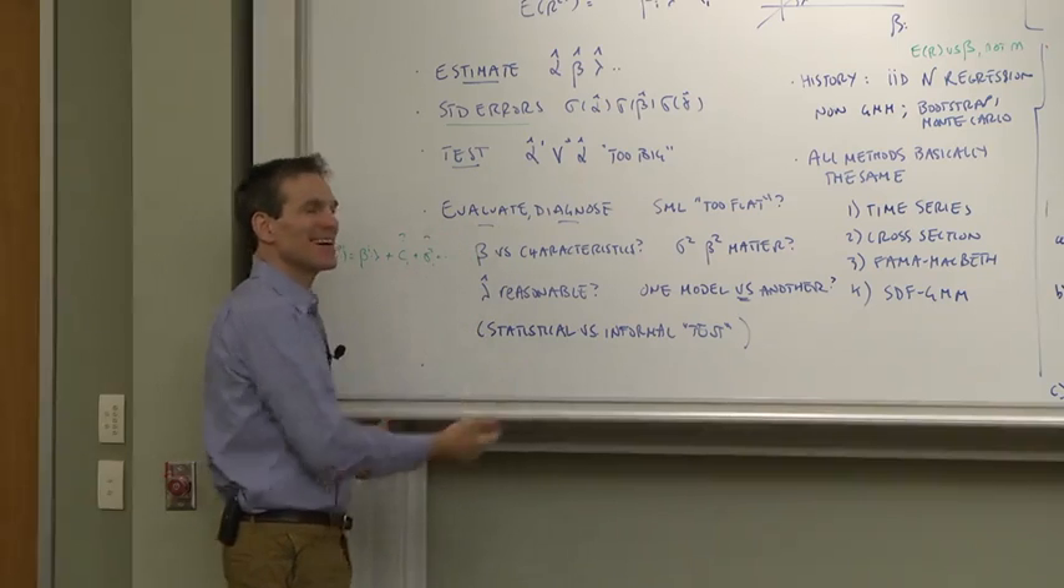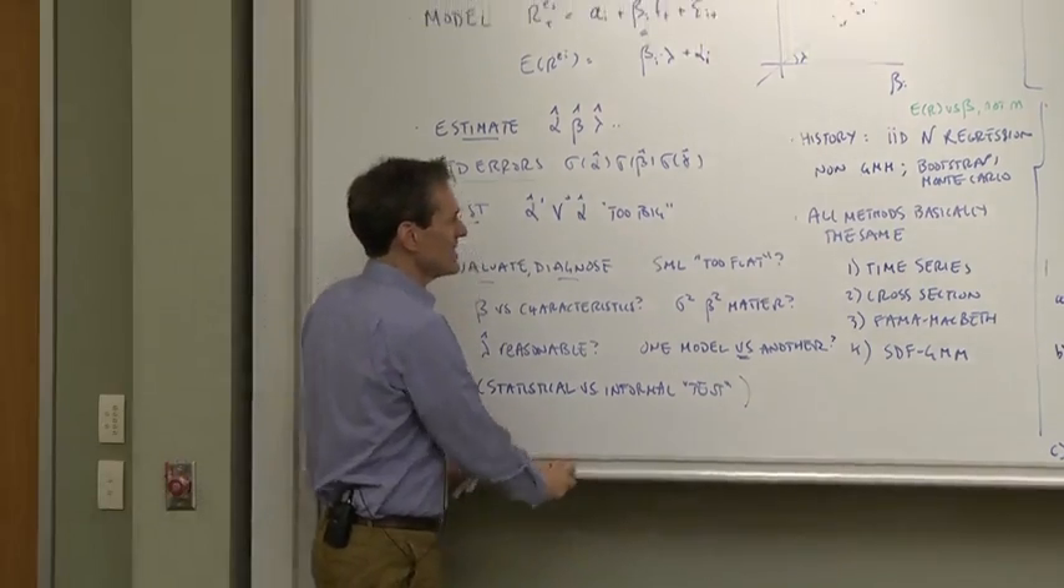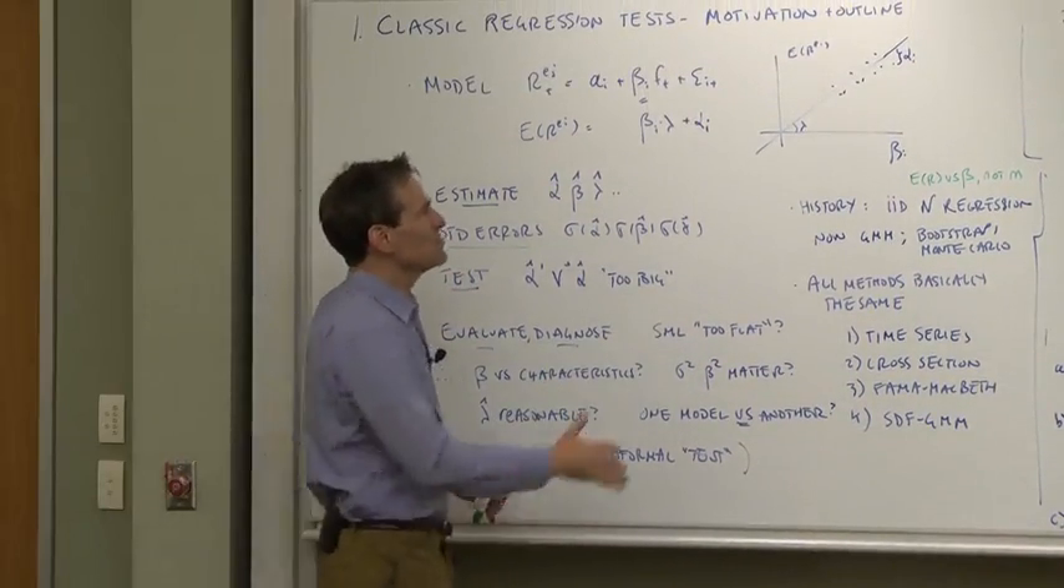That's a statistician's notion of the word test. When we take asset pricing models to data, we do all sorts of other stuff which I'm going to call evaluate and diagnose the models. We ask questions like is the SML, the security market line, too flat? Often this comes out too flat. That's an interesting puzzle for asset pricing models.